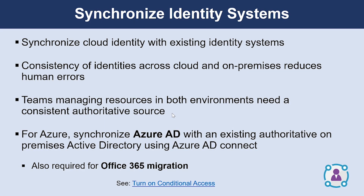The second tip is to synchronize identity systems. Consistency of identity across cloud and on-premises will reduce human errors and resulting security risk. Teams managing resources in both environments need a consistent authoritative source to achieve security assurances.